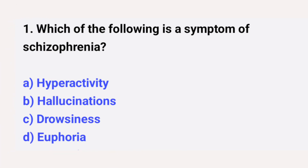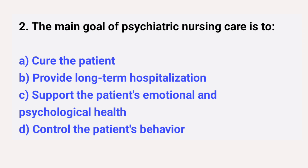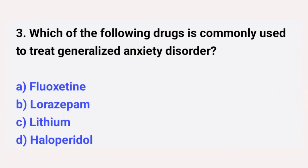Question number one: which of the following is a symptom of schizophrenia? The right answer is option B: hallucination. Question number two: the main goal of psychiatric nursing care is to? The right answer is option C: support the patient's emotional and psychological health. Question number three: which of the following drugs is commonly used to treat generalized anxiety disorder? The right answer is option B: lorazepam.